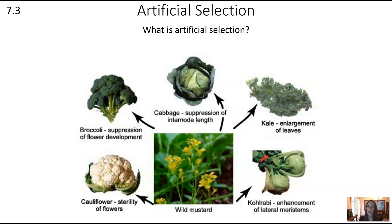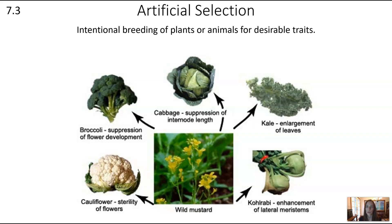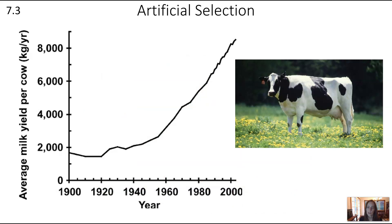Next topic — unit 7.3 — what is artificial selection? Artificial selection is simply when humans are the selective pressure. This is the intentional breeding of plants or animals for desirable traits. For example, wild mustard has given rise through many generations of artificial selection to many of our common vegetables. Another example is milk yield per cow — farming can influence traits in both plants and animals. We also see it a lot in pets, which have been artificially selected for traits desirable to humans.